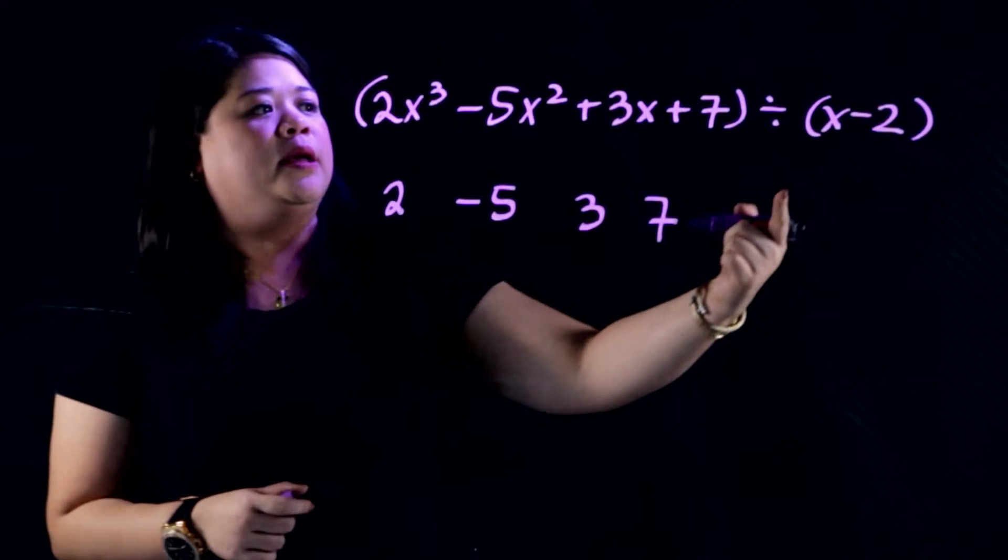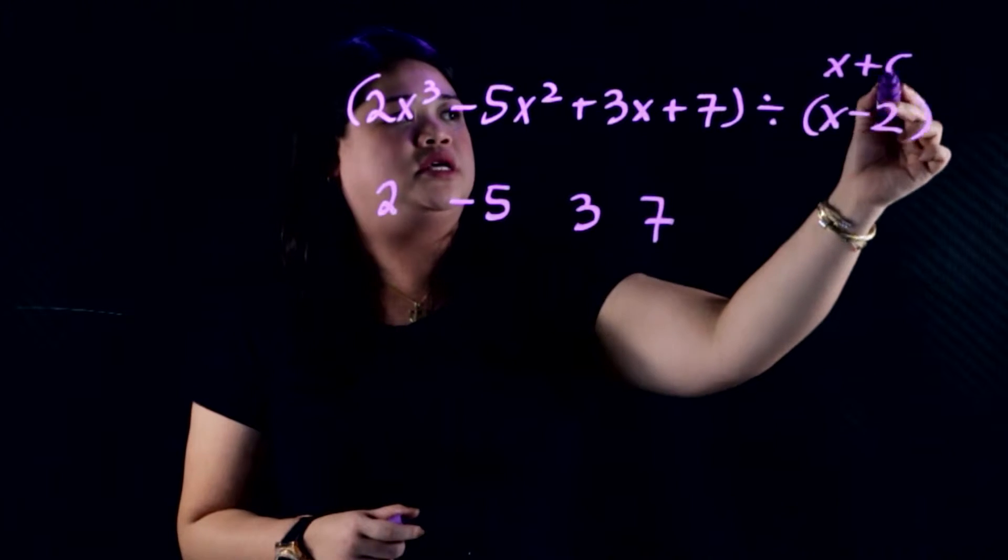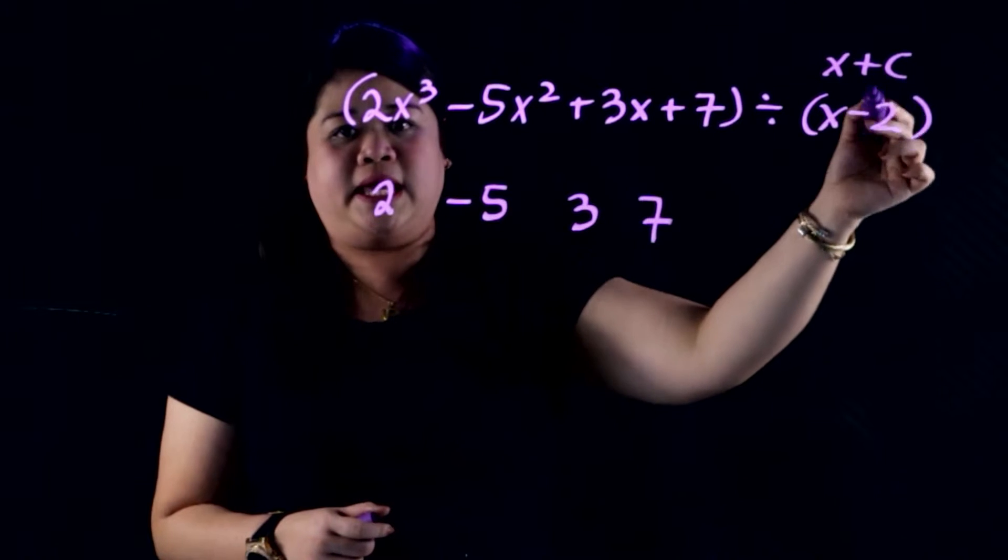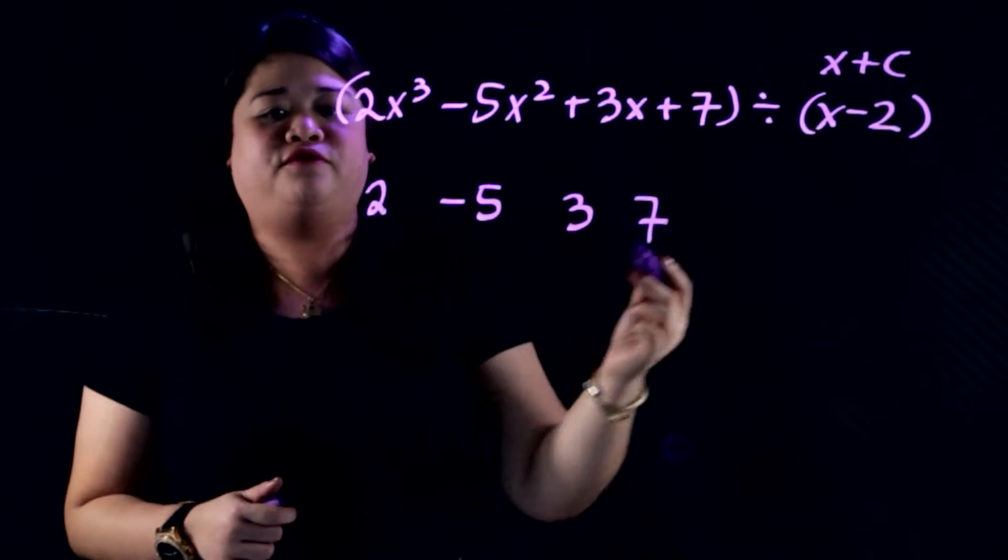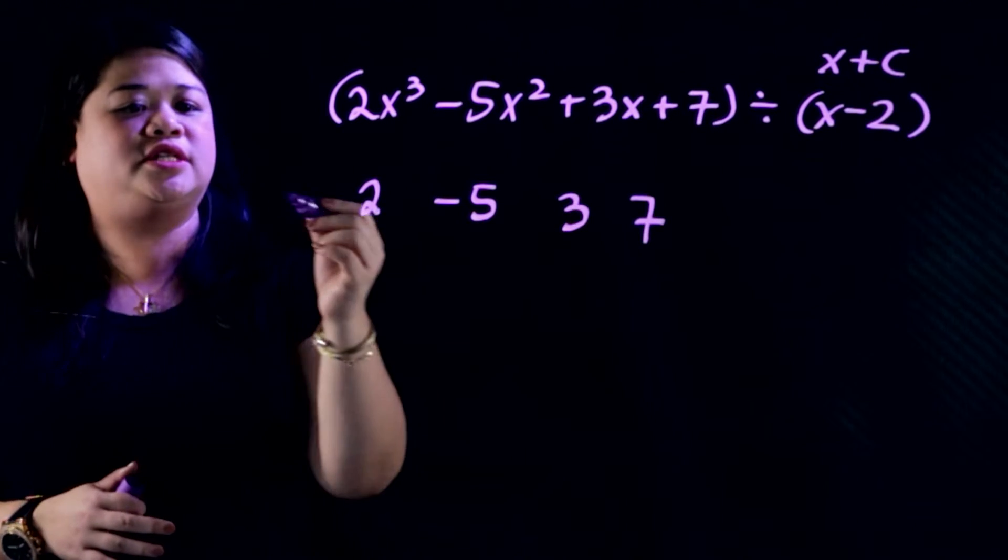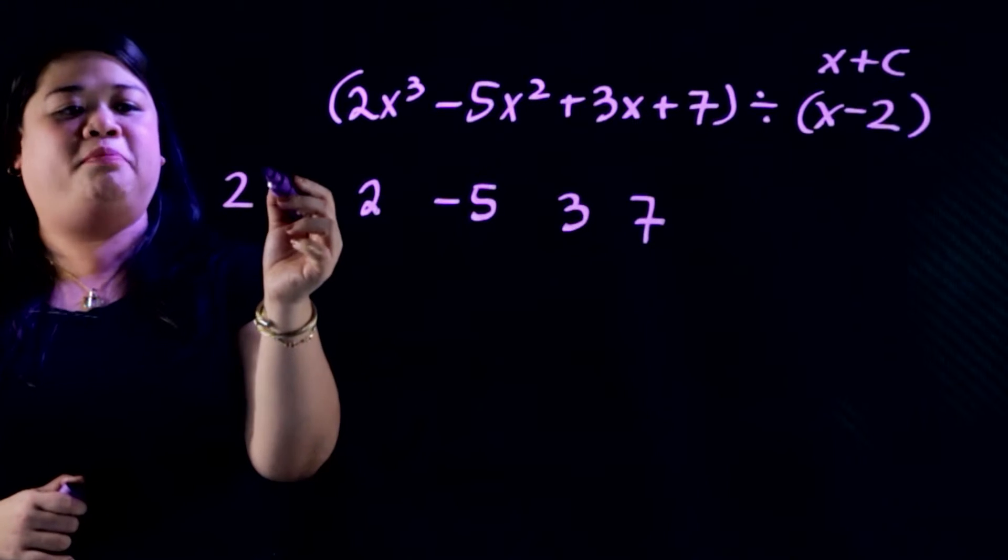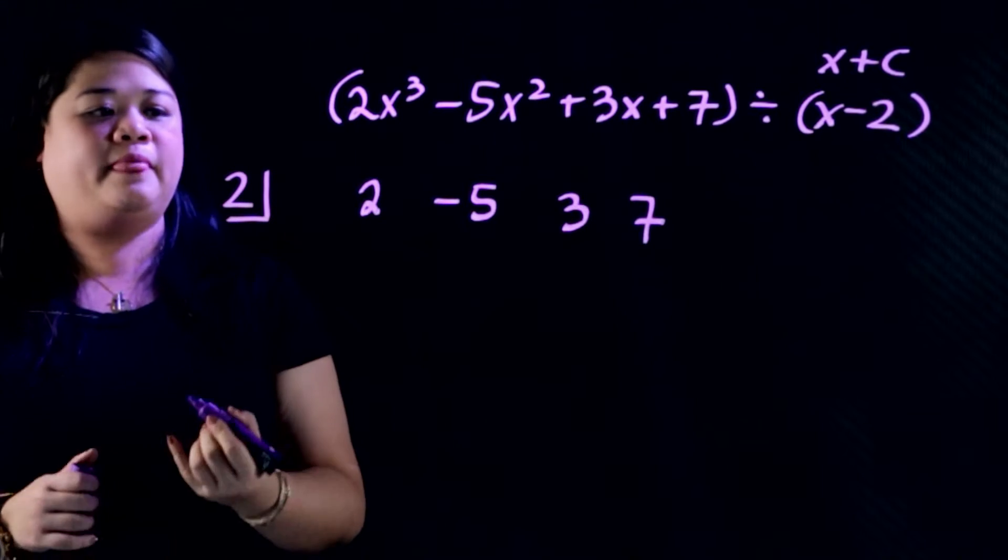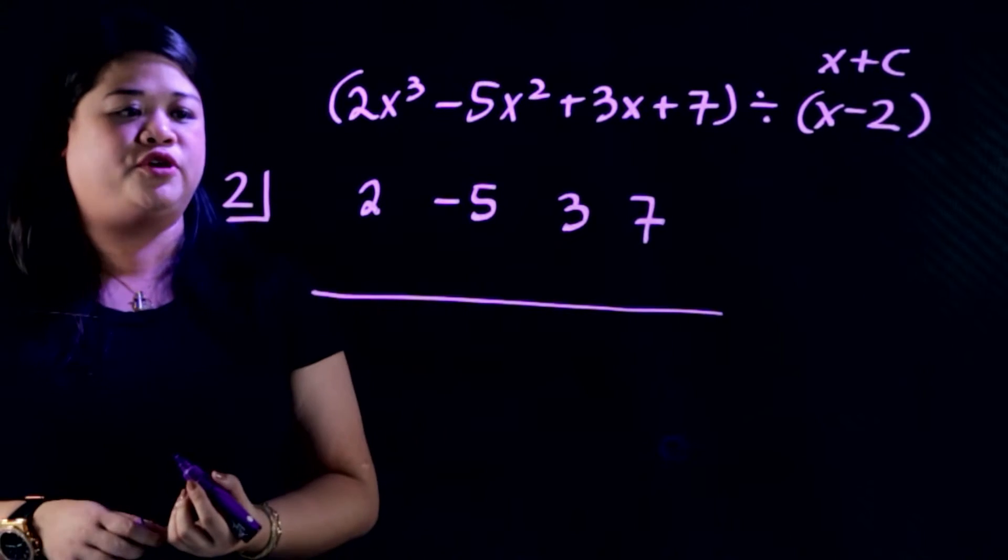Now remember that your divisor always takes the form x plus c. So it take lang natin yung c kaya hindi natin kinukuha ng negative 2. Ginagamit natin parang binabaligtad natin yung sign. So if it's negative, ginagawa natin siyang positive. And then again, we place it in a window here. And then you proceed with the process. Katulad nung ginawa natin sa first example,